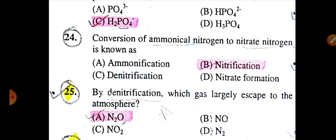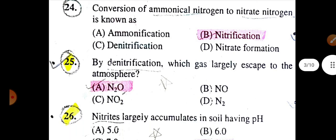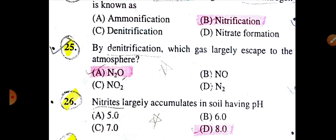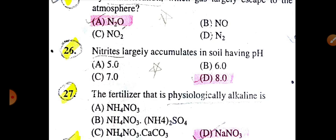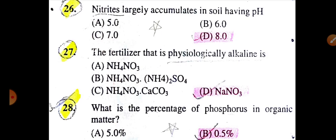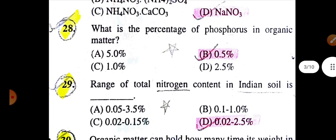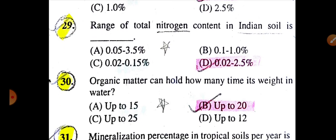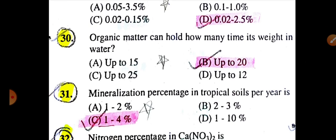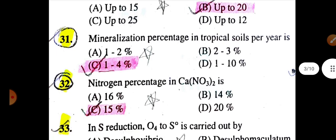Conversion of ammonium nitrogen to nitrate nitrogen is known as nitrification. By denitrification, N2O largely escapes to the atmosphere. Nitrate largely accumulates in soil having pH 8. The fertilizer that is physiologically alkaline is NaNO3. What is the percentage of phosphorus in organic matter is 0.5%. The range of total nitrogen content in Indian soil is 0.02 to 2.5%. Organic matter holds up to 20 times its weight in water. Mineralization percentage in tropical soil per year is 1 to 4%.